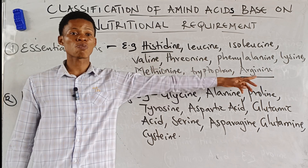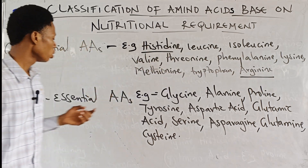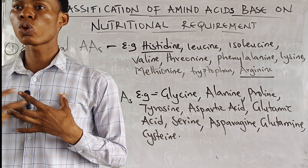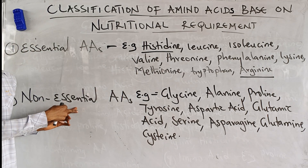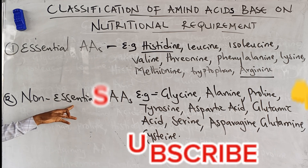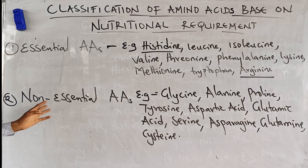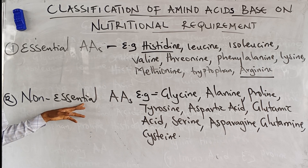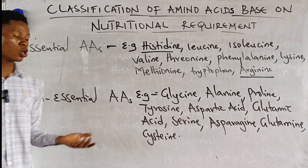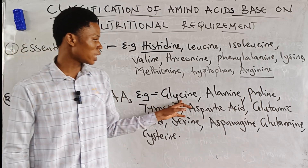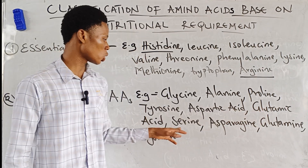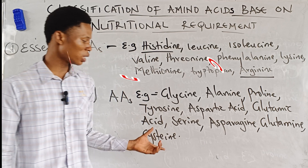Non-essential amino acids are those that our body can synthesize, so it is not necessary that we get them from our diet. Examples of non-essential amino acids — those you can synthesize in your body — are: glycine, alanine, proline, tyrosine, aspartic acid, glutamic acid, serine, asparagine, glutamine, and cysteine.